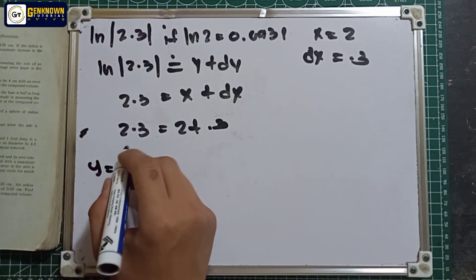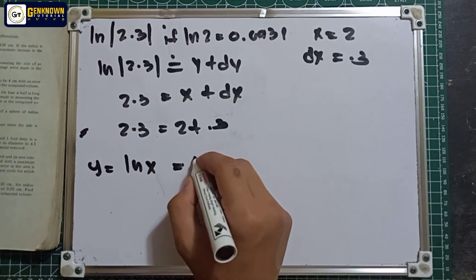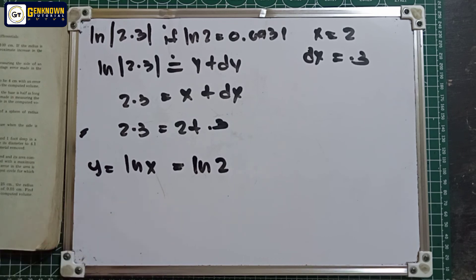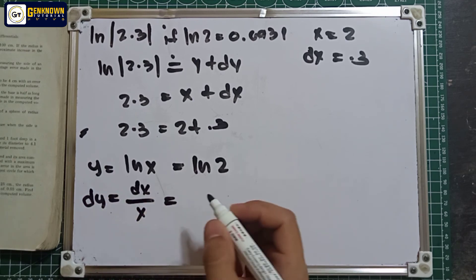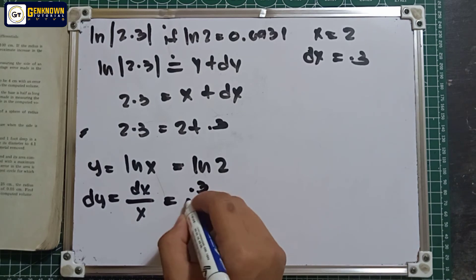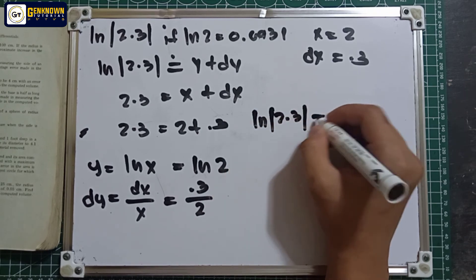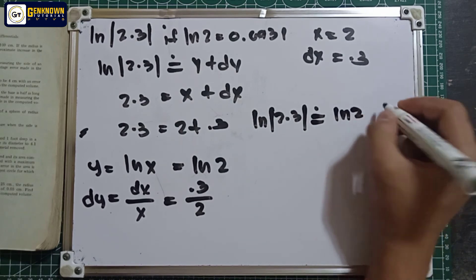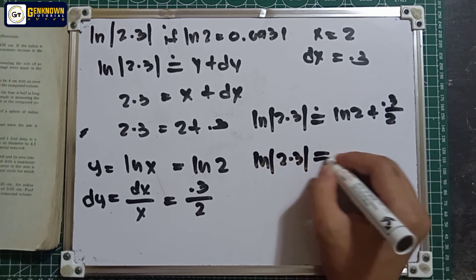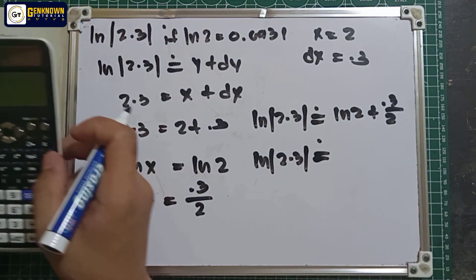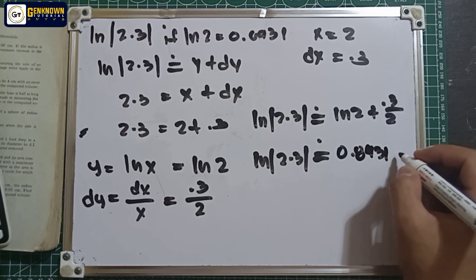Let y equal ln(x). The differential is: dy equals dx over x. Substituting: dy equals 0.3 over 2. So ln(2.3) is approximately equal to y plus dy, which is ln 2 plus 0.3 over 2, giving 0.6931 plus 0.15, which equals approximately 0.8431.